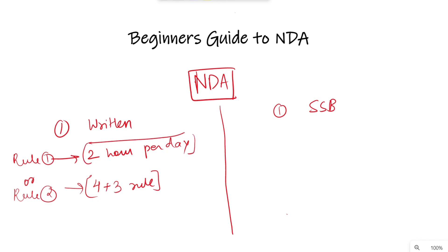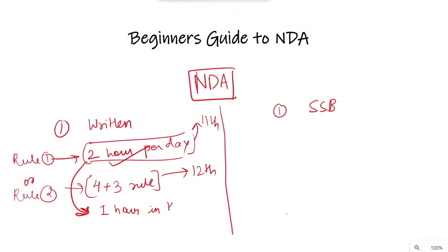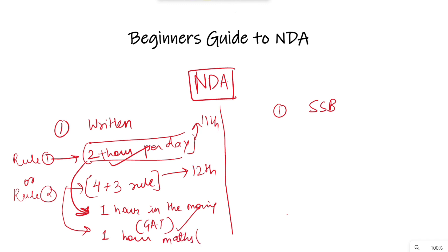2-hour per day rule मैं follow करता था during my 11th class। दो घंटे निकालने हैं — 1 hour in the morning, जिसमें आपको GAT पढ़नी है, school जाने से पहले। दूसरा जो घंटा होता है, उसमें आपको पढ़नी है Maths। Maths रात को पढ़नी है, सोने से पहले। Minimum 2 hours हर दिन होना चाहिए। सारे questions करने हैं।